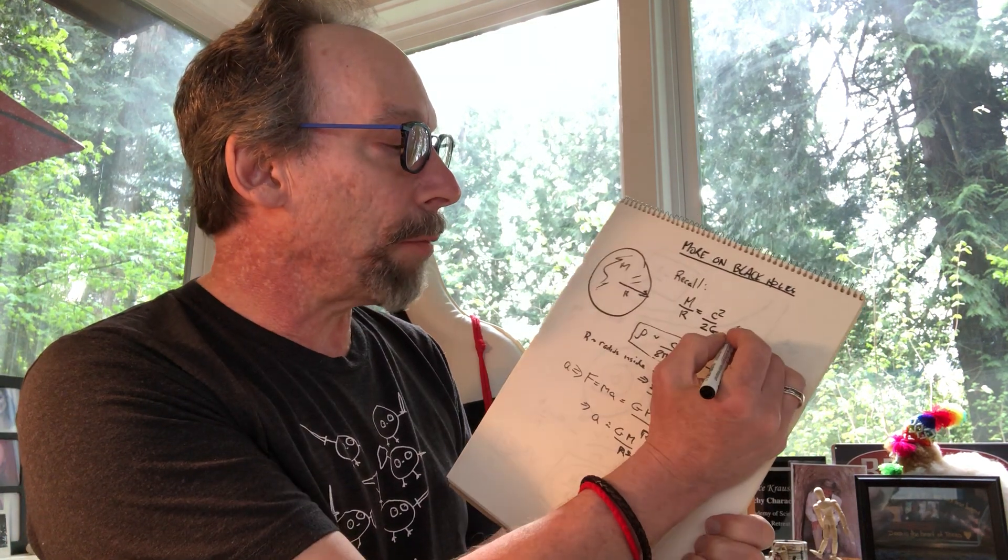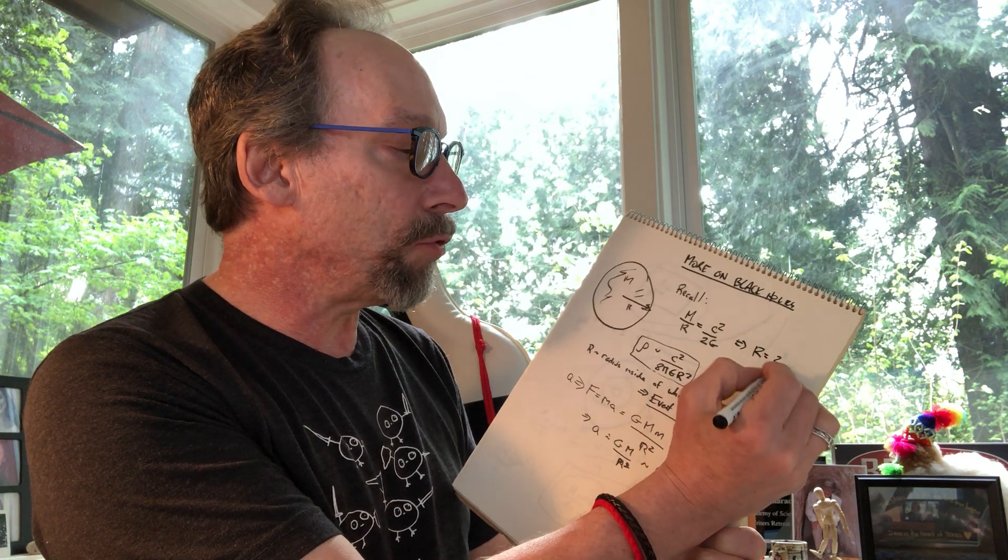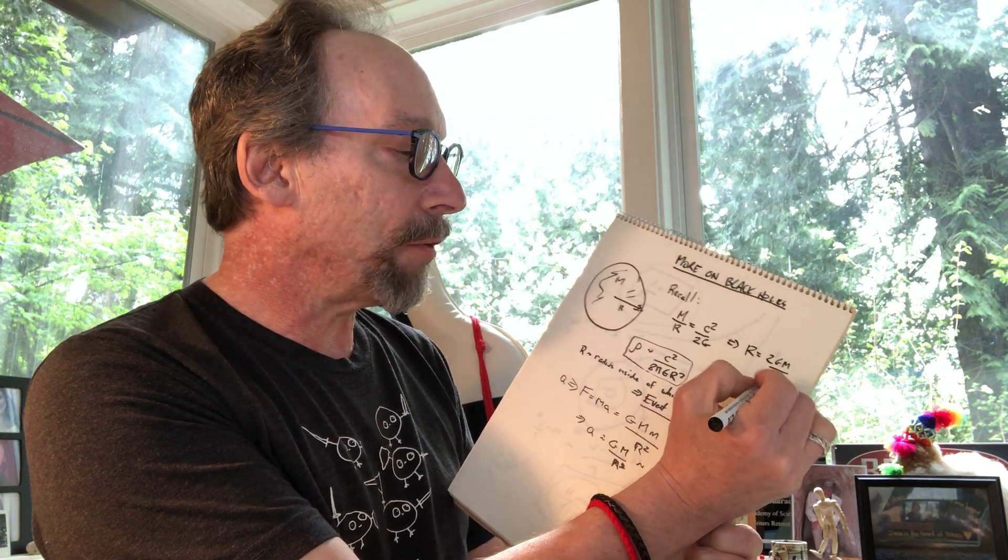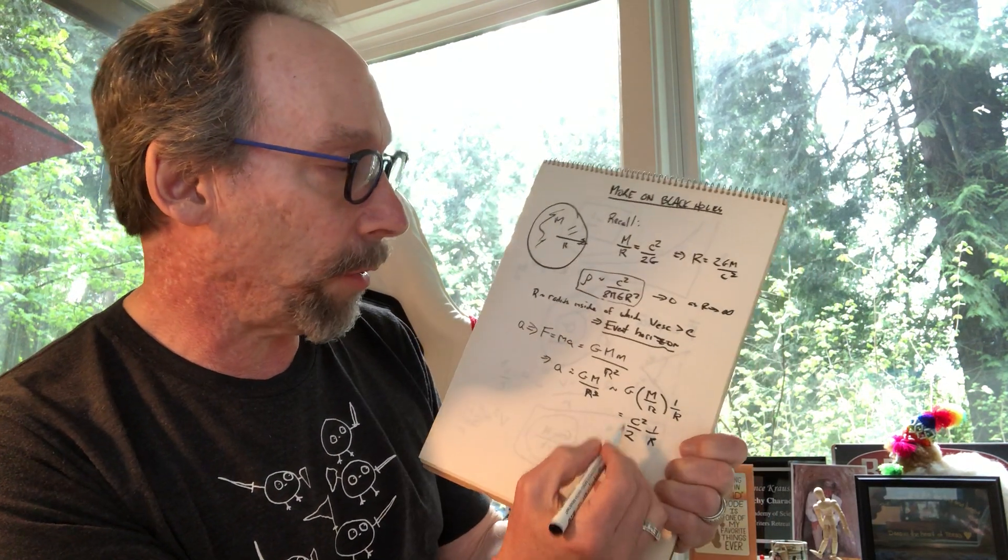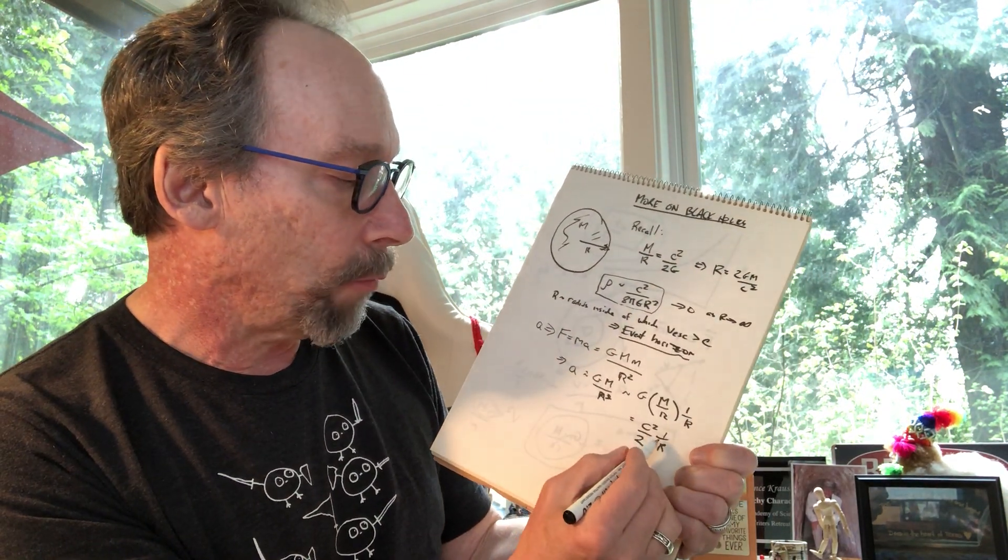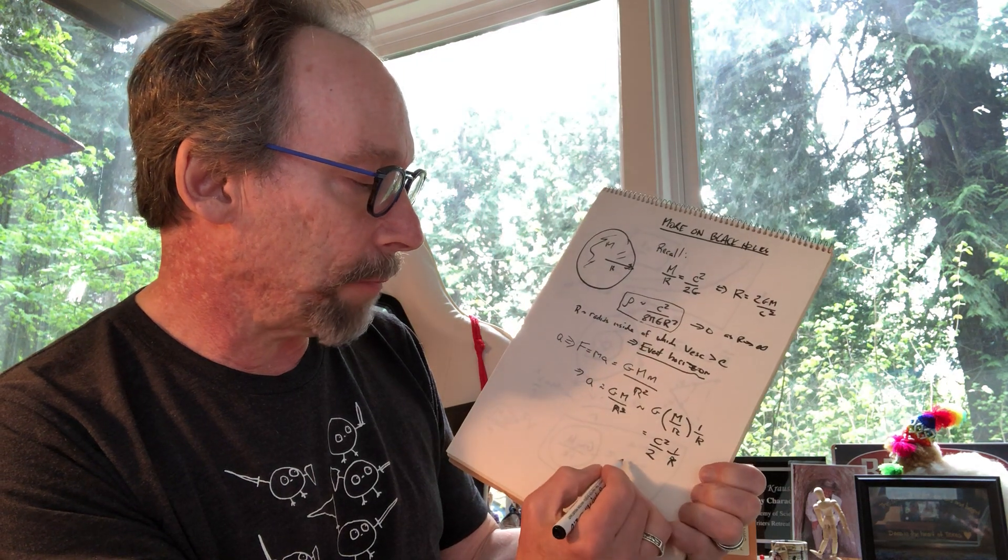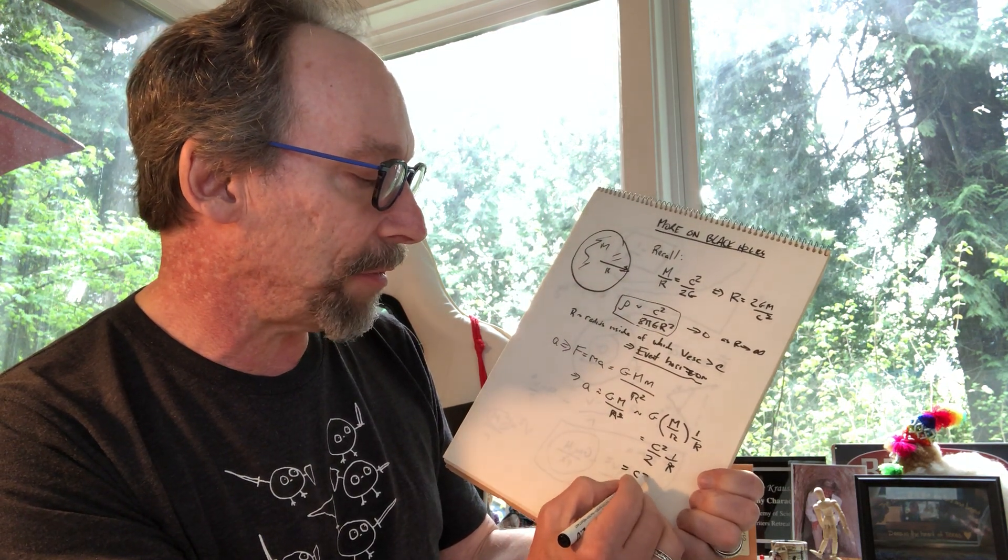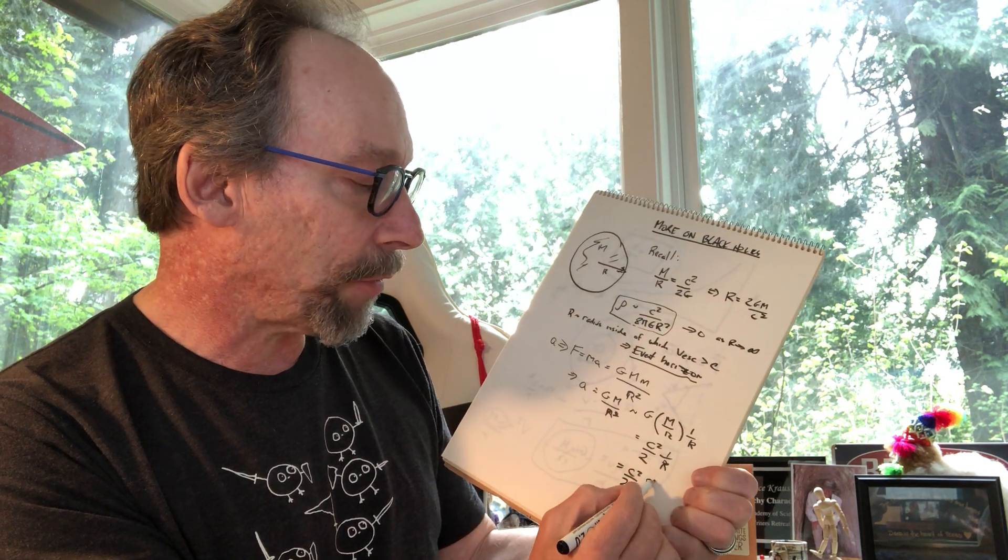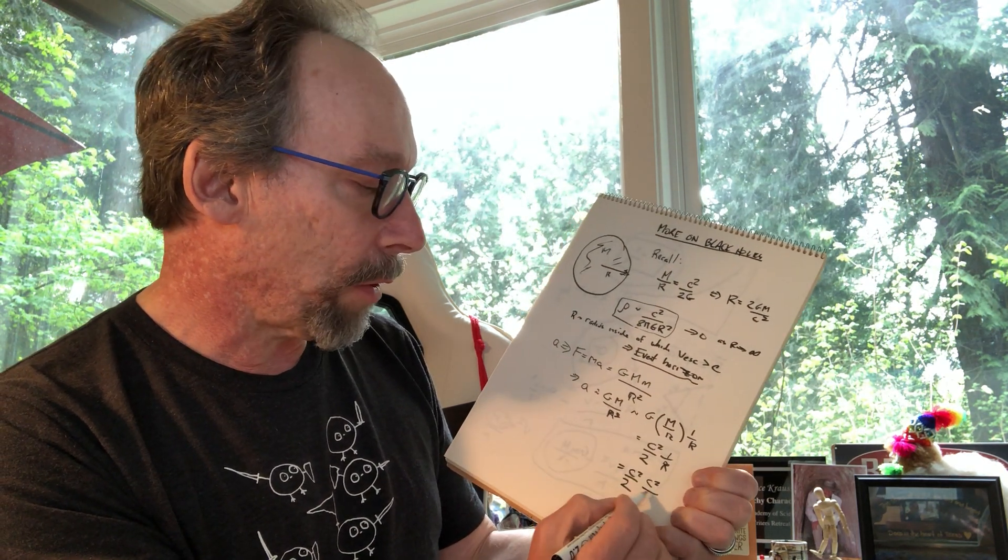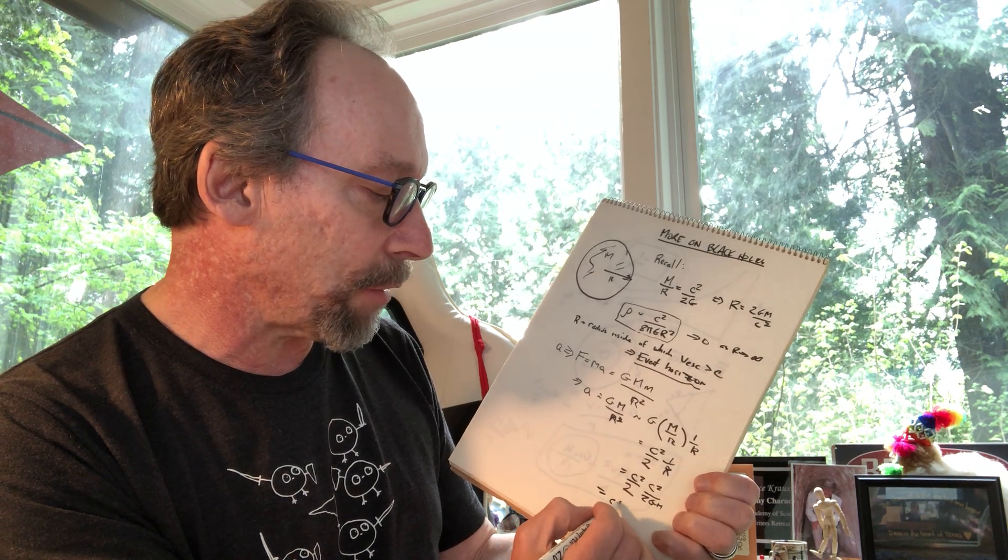But 1 over r, from this, I can write r is equal to 2gm over c squared for a black hole, for an object mass m where the escape velocity is the speed of light. So, let me plug that in. This becomes c squared over 2 times 1 over r, which brings another c squared up here, over 2gm. And this, therefore, becomes c to the fourth over 4gm.